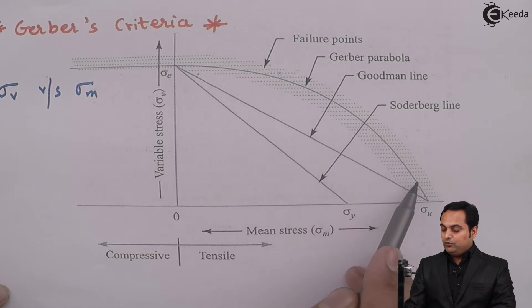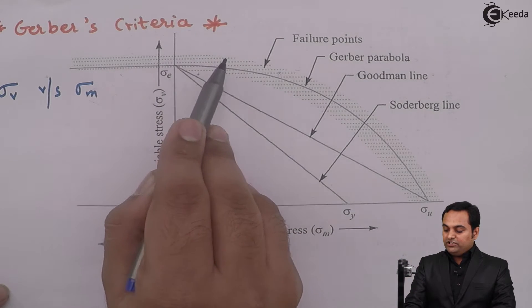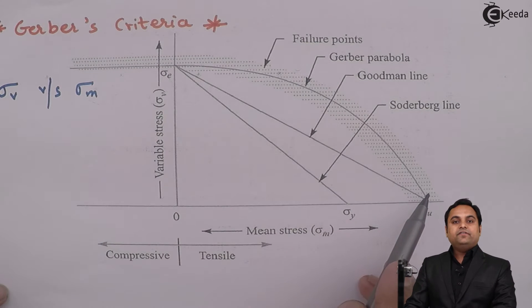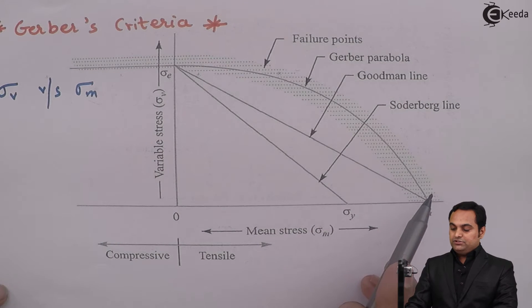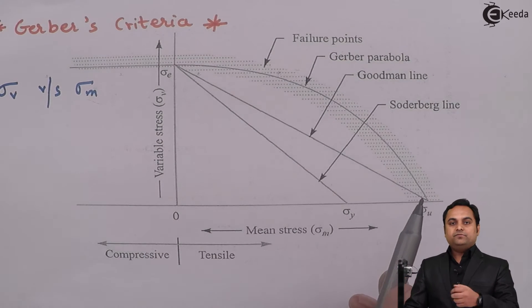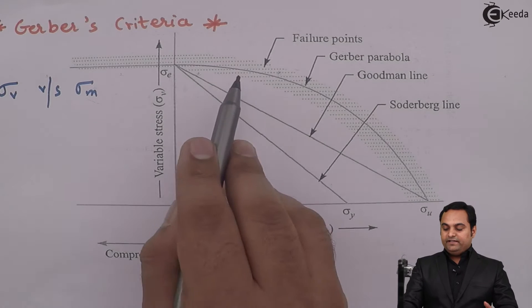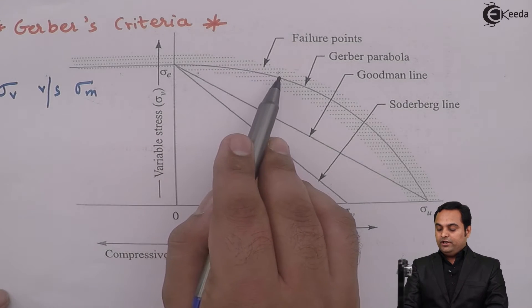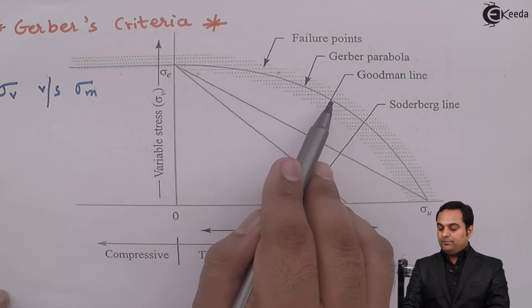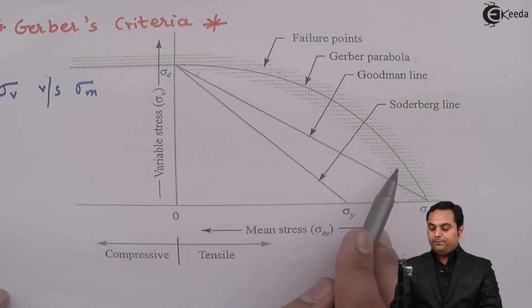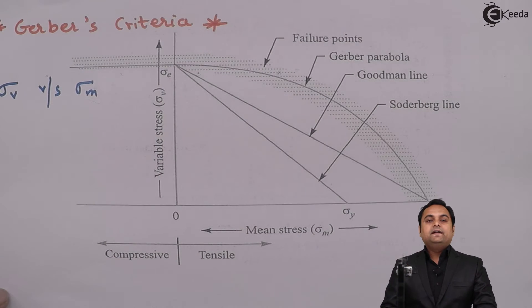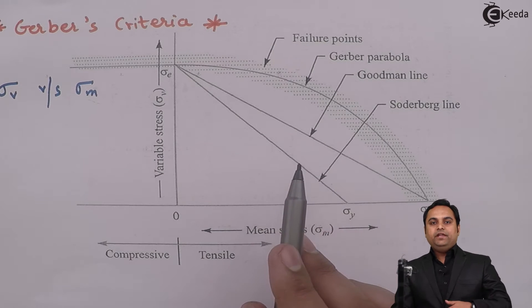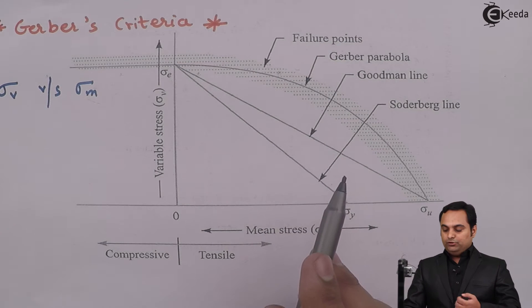On this graph we have a Gerber parabola, and the points which are closer to the parabola are called the failure points. When an element was subjected to some kind of load and it failed, those stress values are plotted and they come closer to the Gerber parabola.